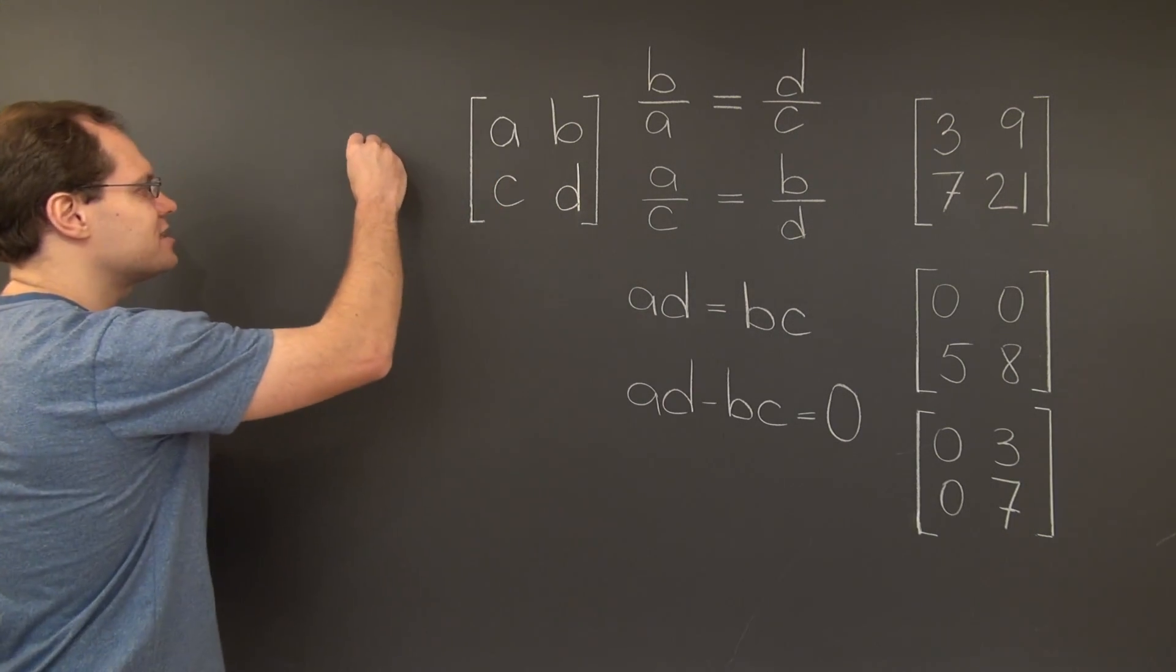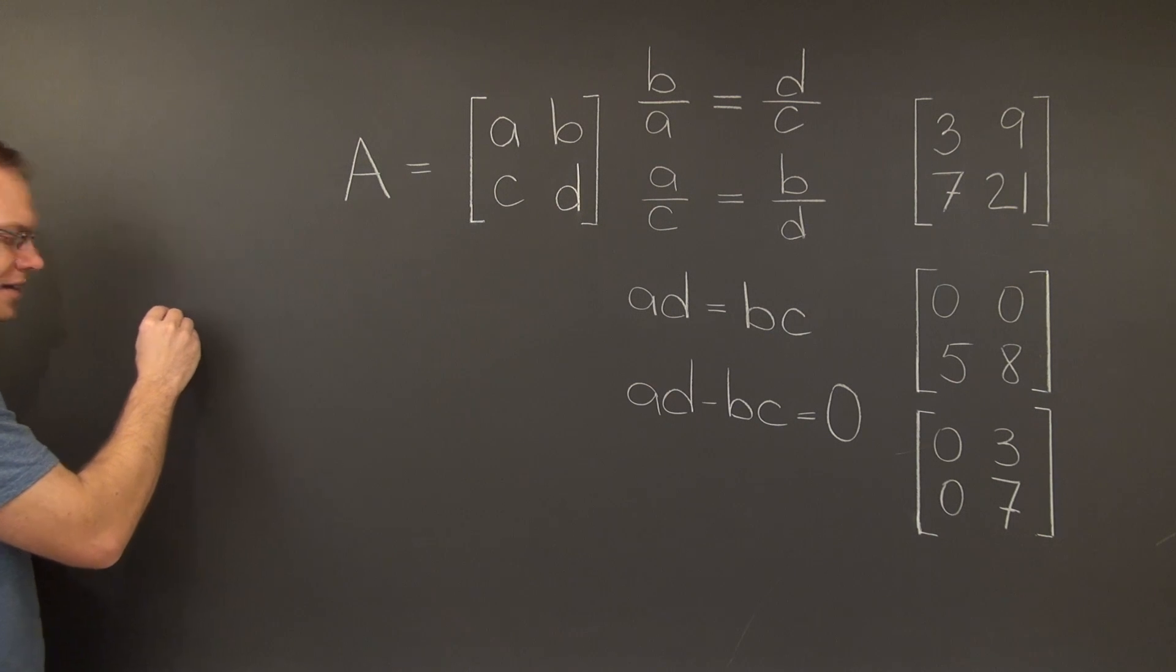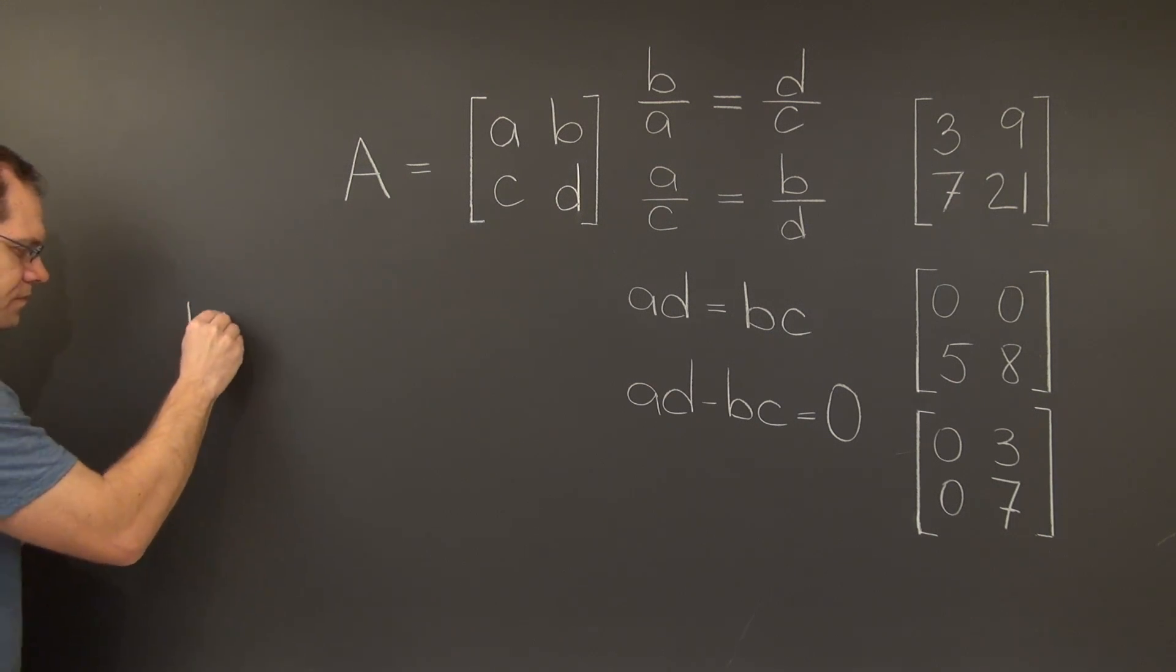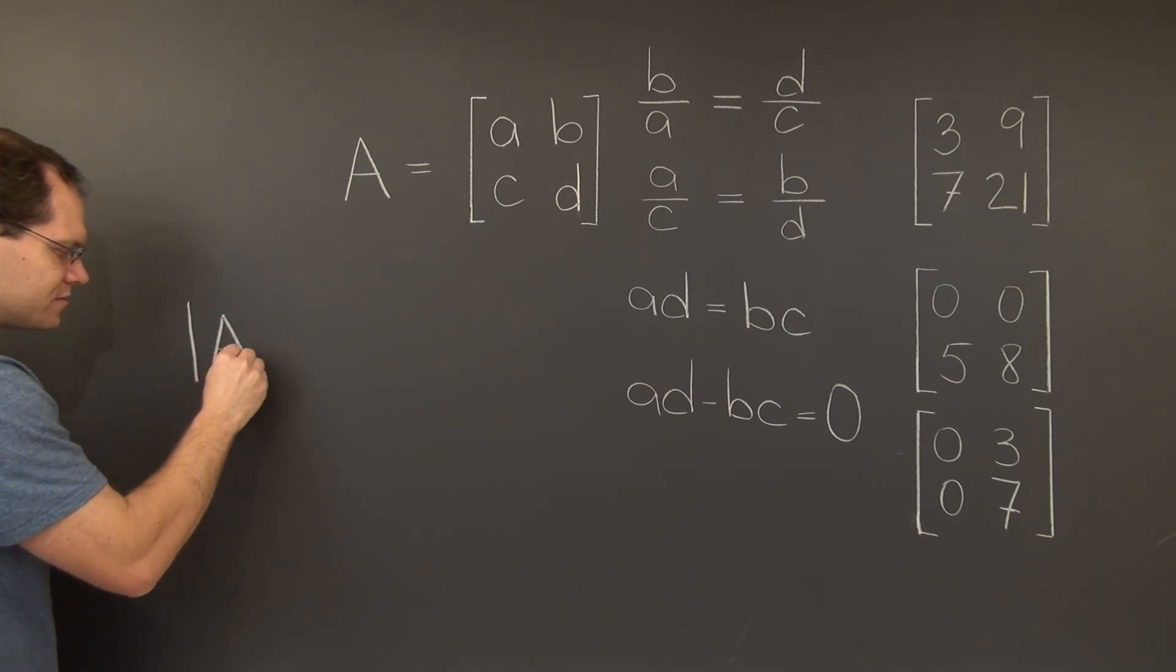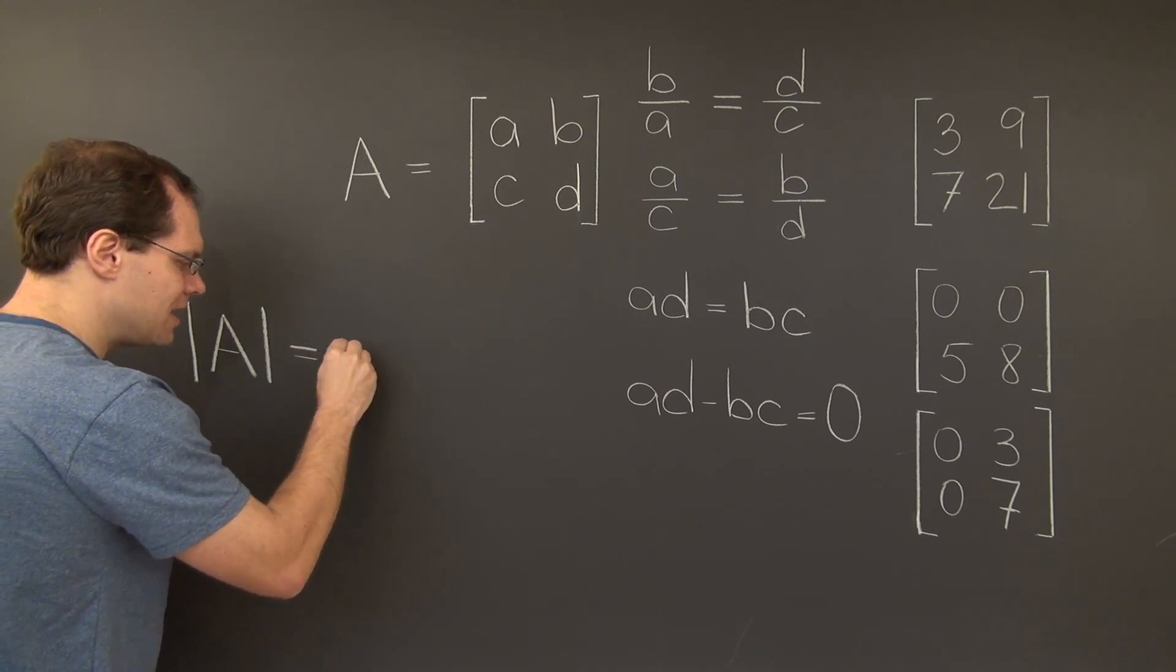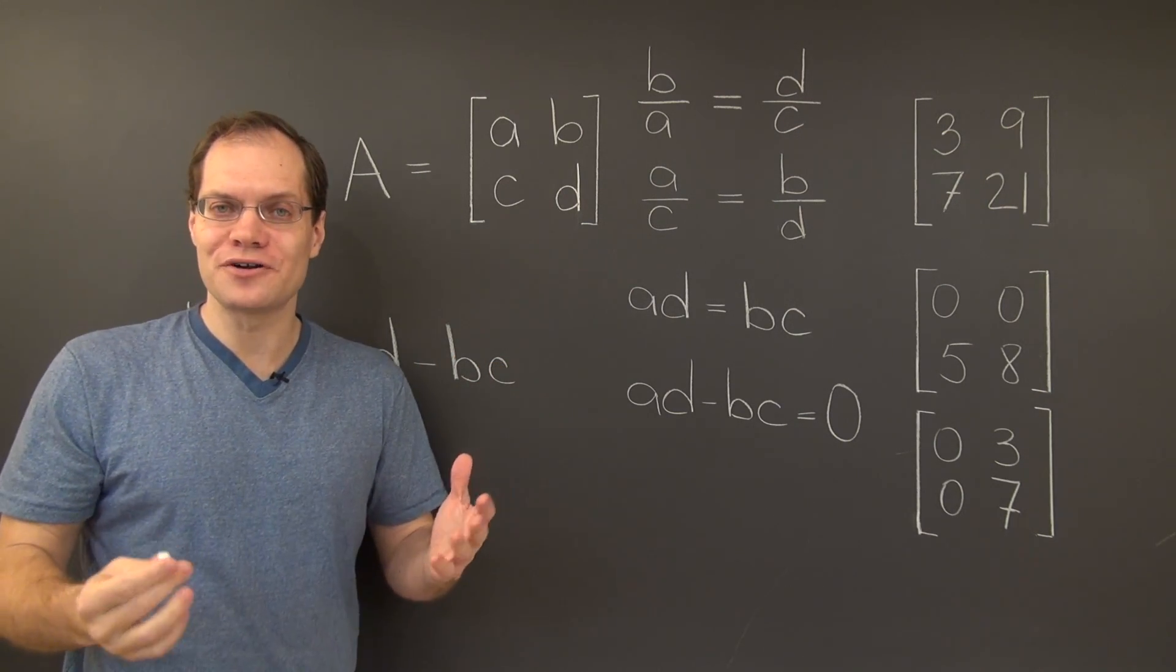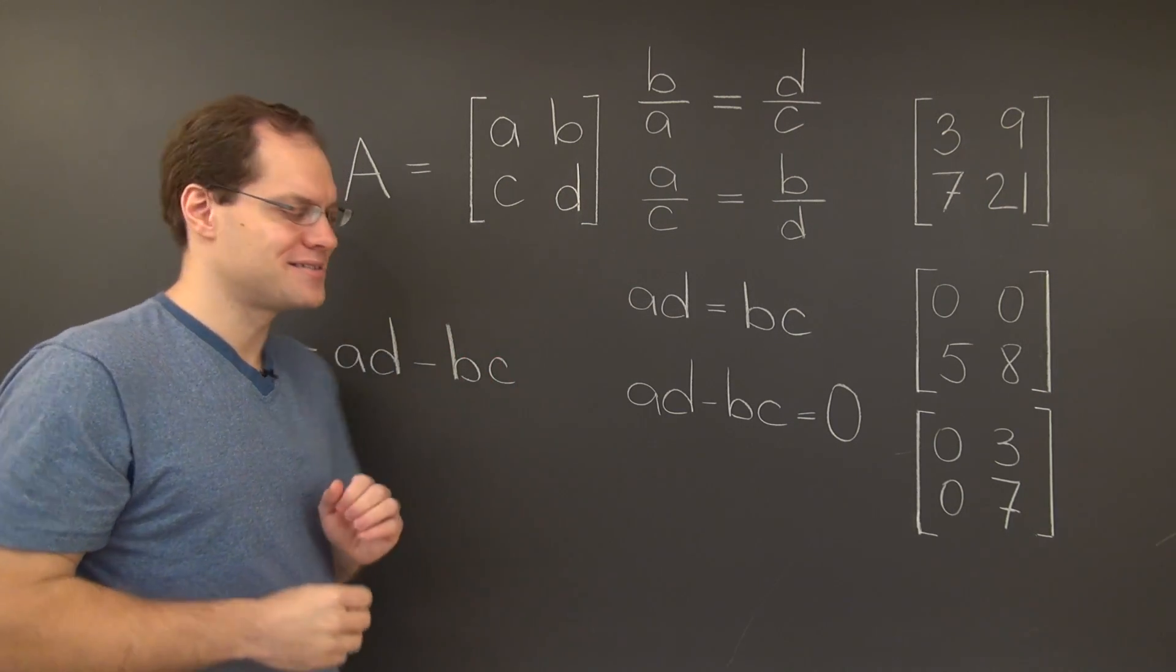Let's write that down. Let's give this matrix a name and call it A. And then we can write that the determinant of A, denoted by the vertical bars, is indeed equal to AD minus BC. And this definition is so important that it deserves to be boxed.